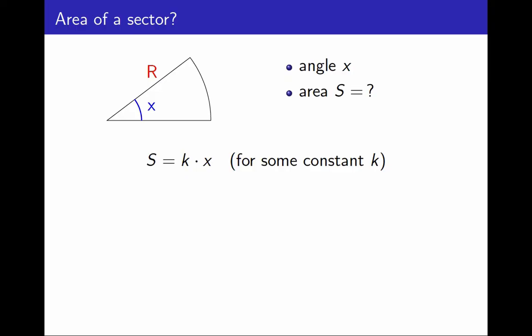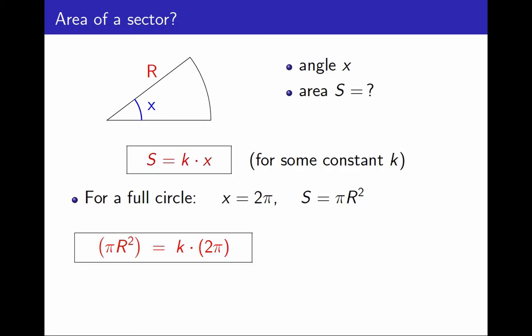How do I figure out the proportionality constant? Luckily, there is one specific sector whose area I know: the full circle. I can think of the full circle as a sector with angle 2π, and its area is πr². Excellent! I can use this data point to compute the value of the constant k. πr² must be equal to k times 2π.